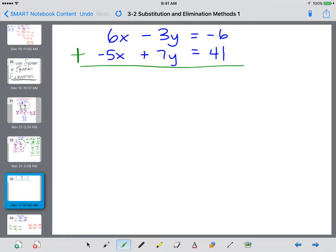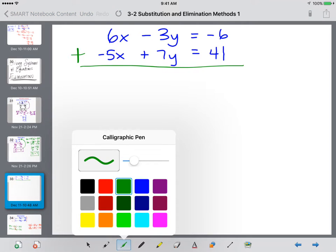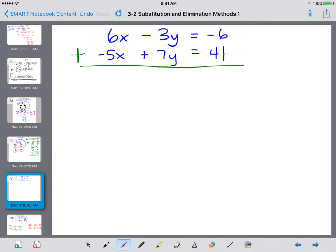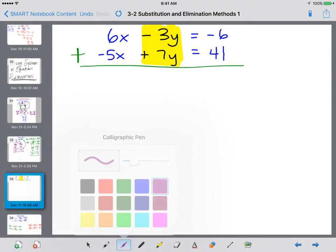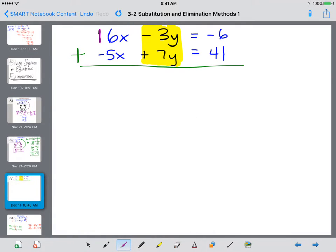So what we're going to do is choose which variable we want to eliminate. For instance, I want to eliminate the y's. So if I want to eliminate the y's, I need them to multiply to become the same number. Well, if I multiply negative 3 times 7, I get negative 21.